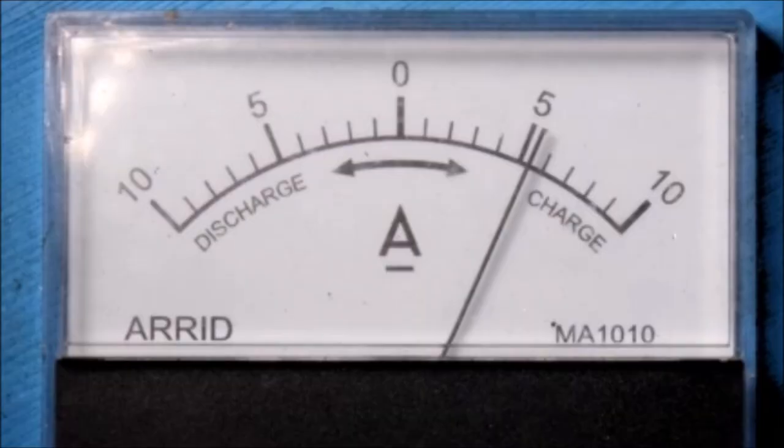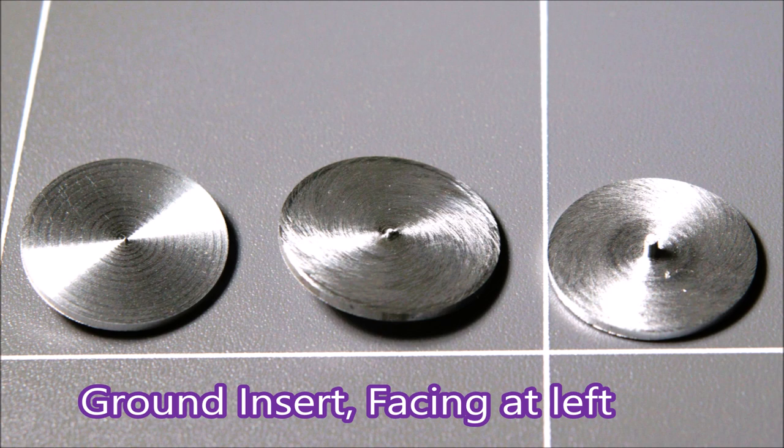So we just flick through these quickly. That's the ground insert just over 4 amps, that's the steel insert just under 5 amps, and that's the polished insert just a bit over 5 amps.